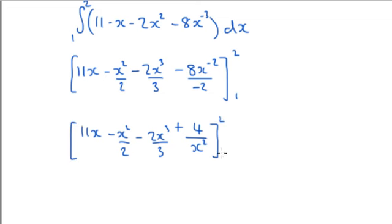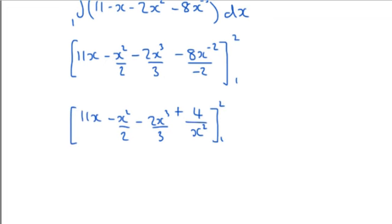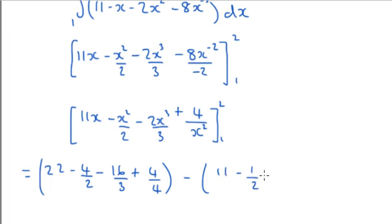Between 2 and 1. So when we put 2 in we're going to get 22 minus 4 over 2 minus 16 over 3 plus 4 over 4, take away 11 minus a half minus 2 over 3 plus 4.